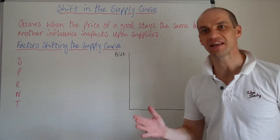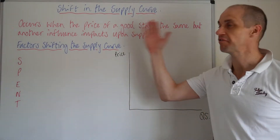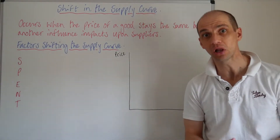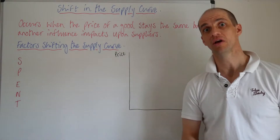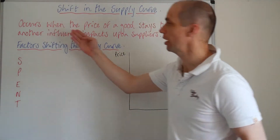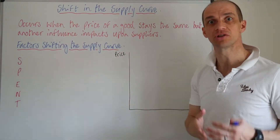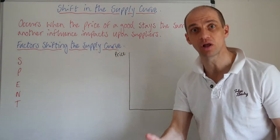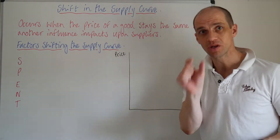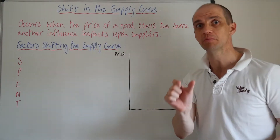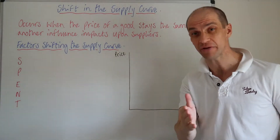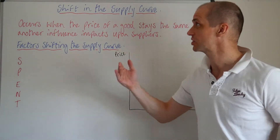Hi guys, so let's now take a look at factors that can shift the supply curve for the firm. This will occur as opposed to that movement along that we saw in our last lesson. So we're not dealing with a movement along, we're dealing with a shift in the supply.